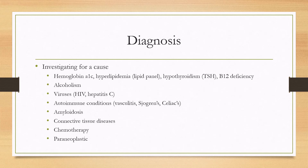After confirming the diagnosis, you'll want to investigate for a cause. Commonly sent labs include hemoglobin A1C for diabetes, a lipid panel, TSH for hypothyroidism, and B12 for deficiency. If those are negative, other causes can be sought — chronic alcohol use, viruses such as HIV, autoimmune conditions, amyloidosis (serum and urine immunofixation), connective tissue diseases, chemotherapy, or paraneoplastic disorders.